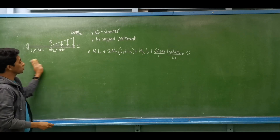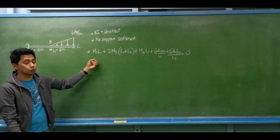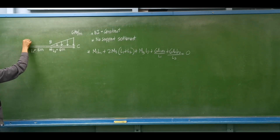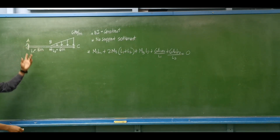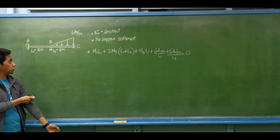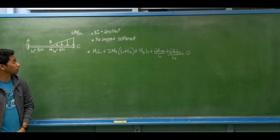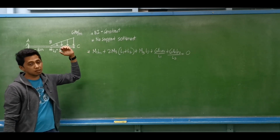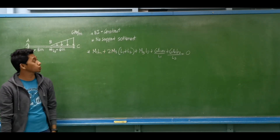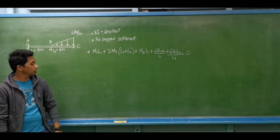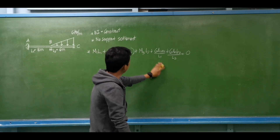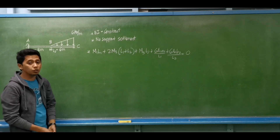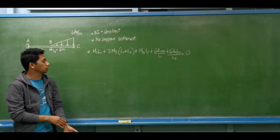Let's have an example considering indeterminate beams with fixed supports. We have beam ABC where span AB has no load, and span BC carries a uniformly distributed load of 6 kN per meter. EI is constant with no support settlement, so we will use the three-moment equation — specifically the form used when there is no support settlement and the moment of inertia is constant.